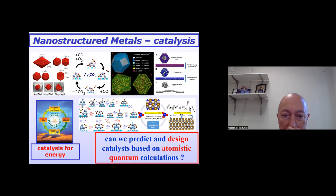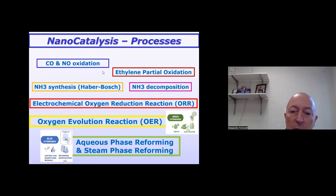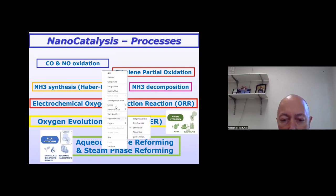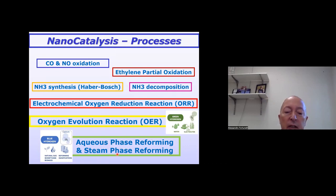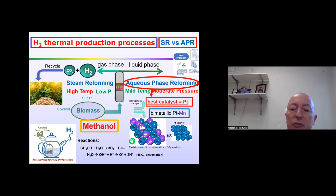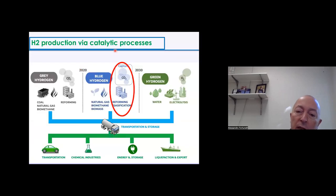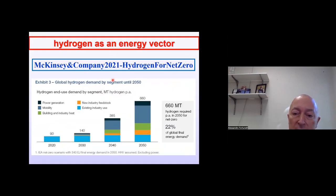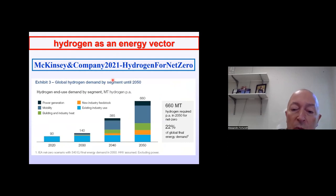We are interested in catalysis and we have studied a number of reactions, in particular recently we have studied reforming reactions for hydrogen production, like steam reforming and aqueous phase reforming, in which you have some biomass — typically in our models it's a simplified methanol species — and you want to react it with water and produce CO2 and H2. You can capture the CO2 and this is called blue hydrogen, which will be more and more important in the future.